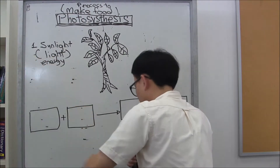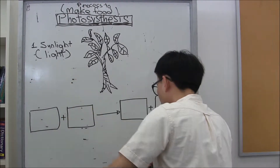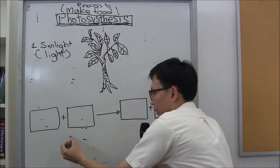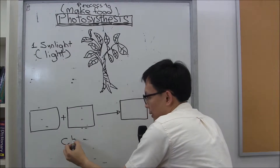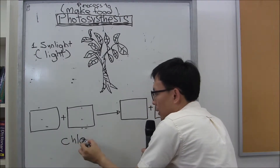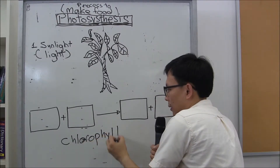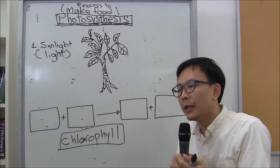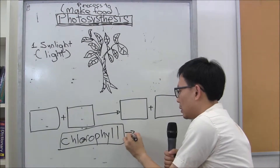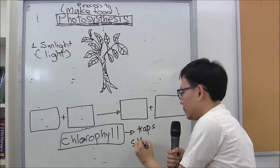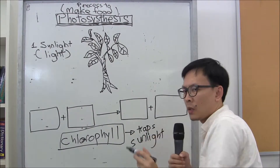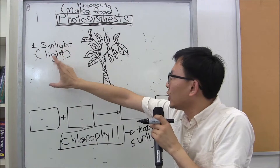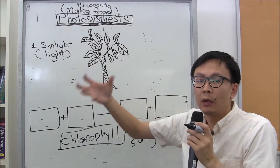Now, before I go on — you learned in P3 what makes plants green. It's a substance found in leaves called chlorophyll. Please know how to spell chlorophyll. Chlorophyll is a green substance found in leaves that traps sunlight. So chlorophyll traps sunlight, and one of the conditions is light, and chlorophyll found in the leaves helps to trap that sunlight.